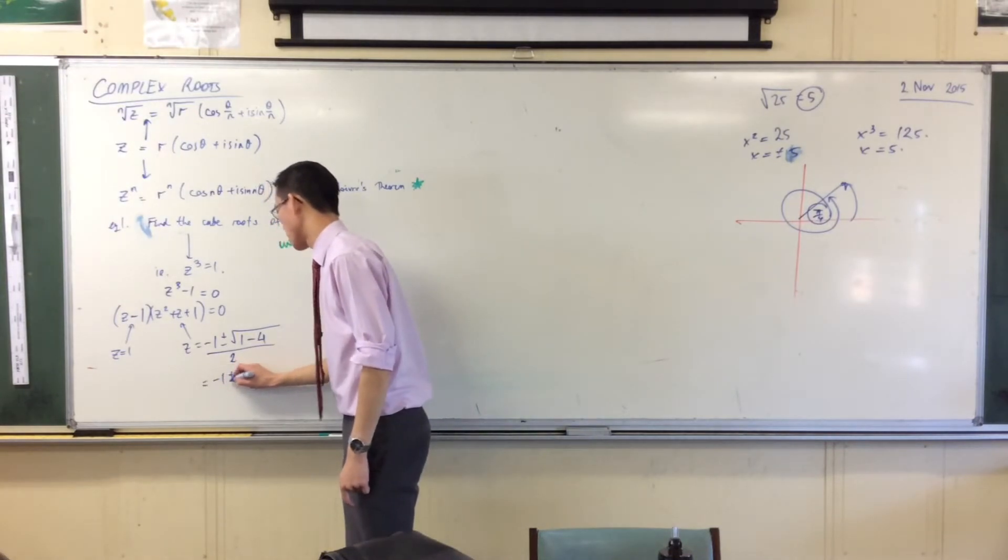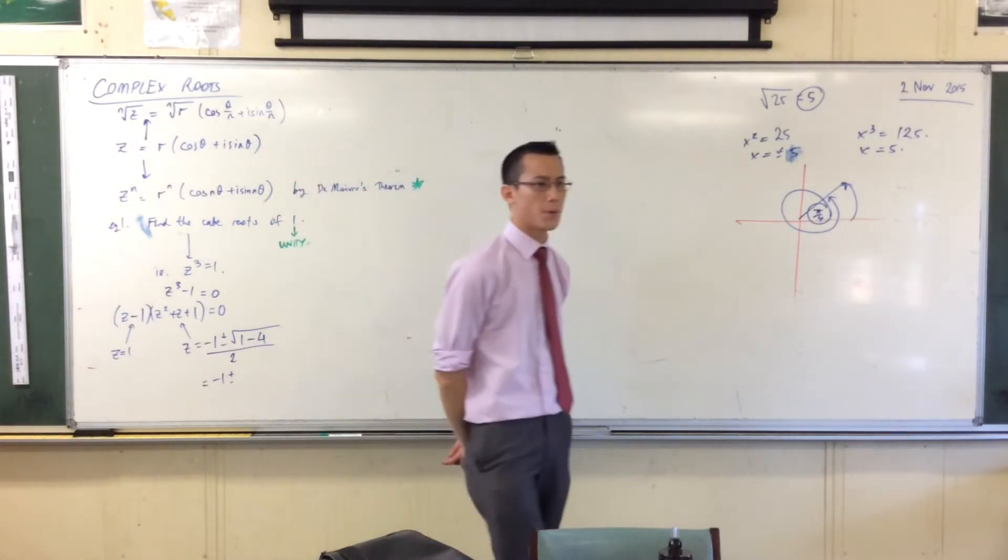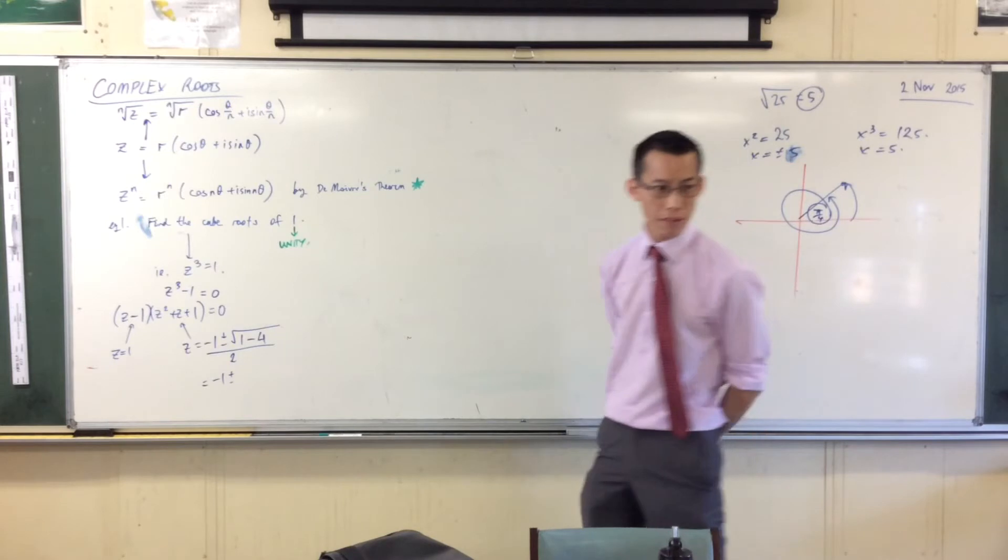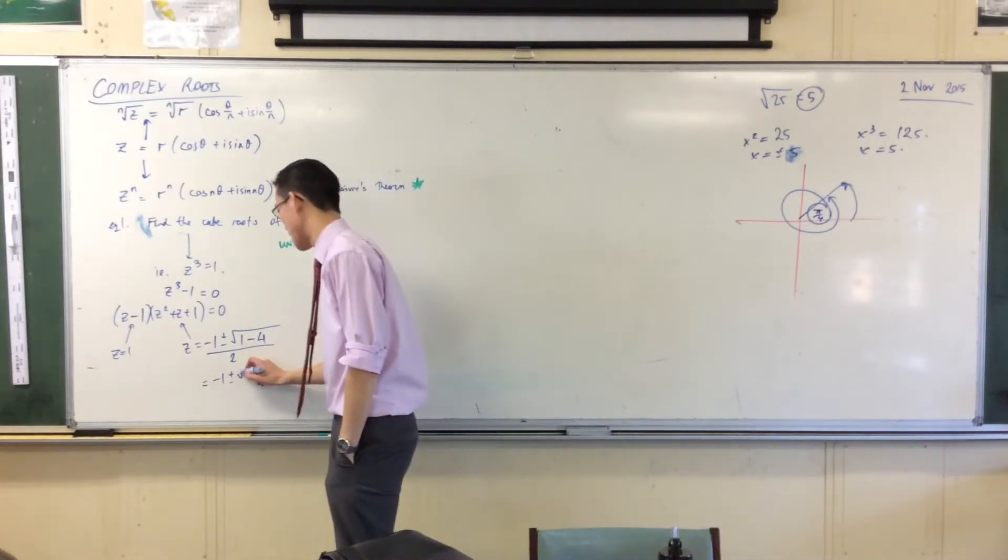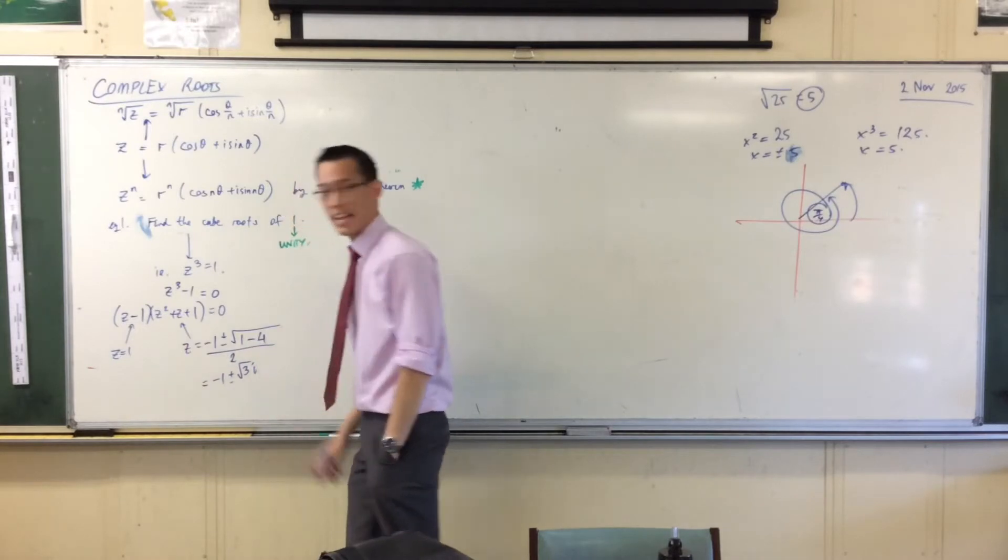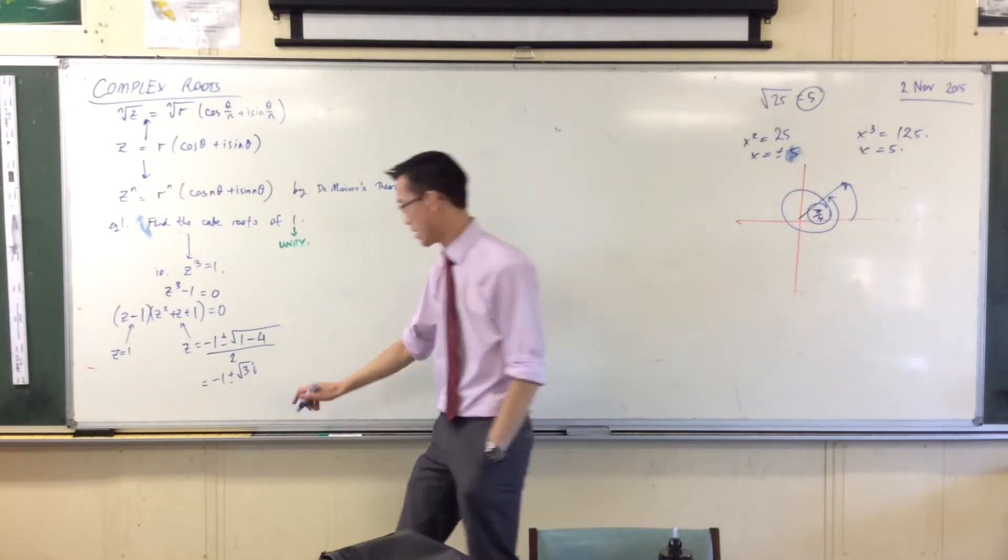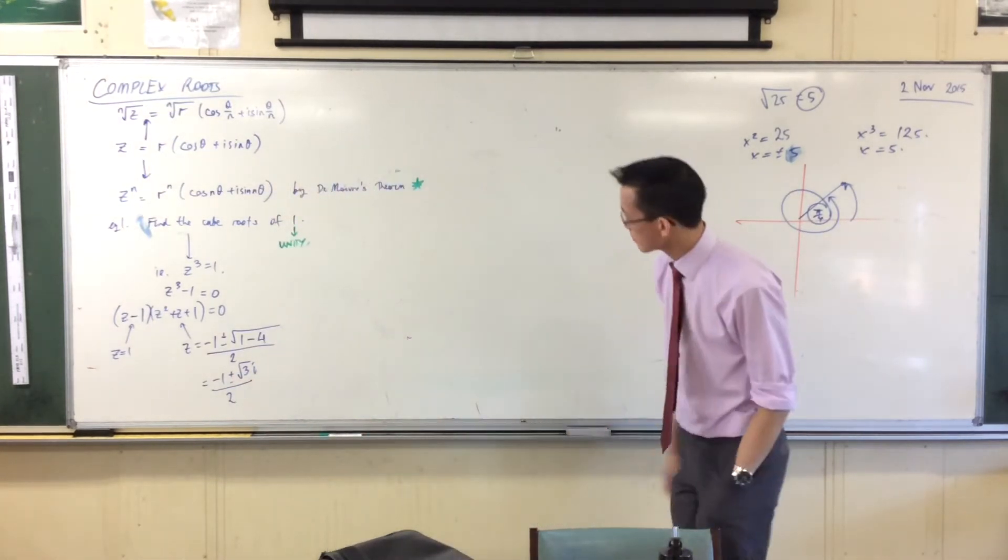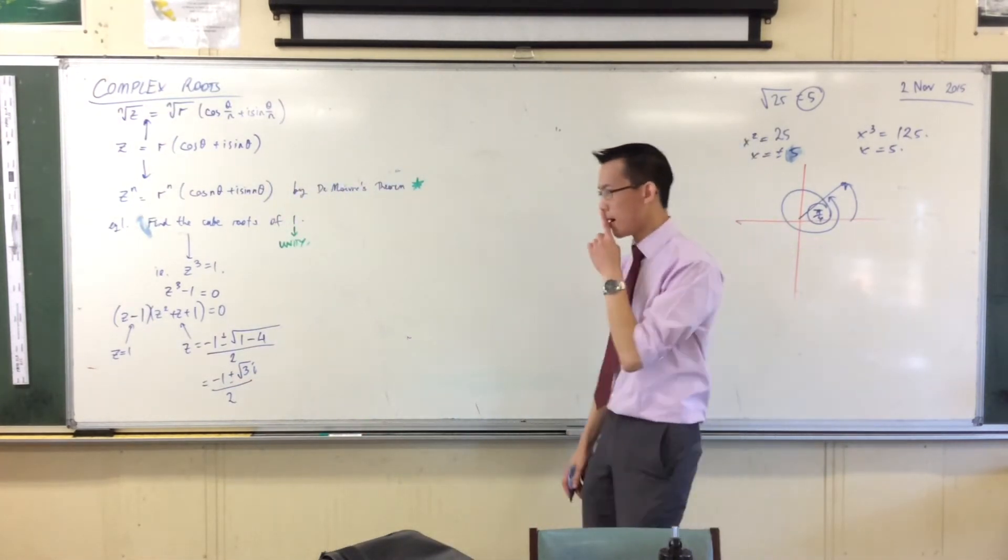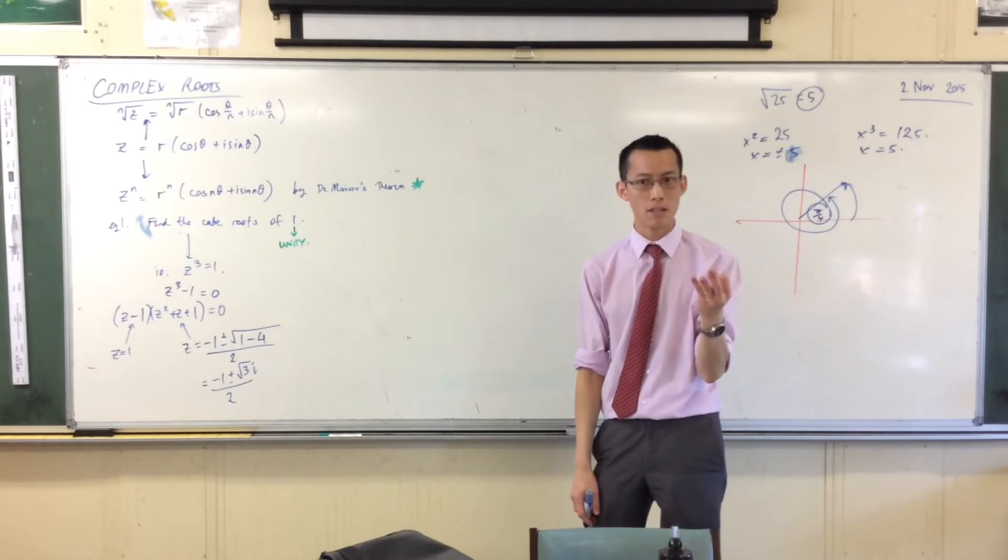On the denominator I have 2a, which is 2. Let's have a look at it. This is minus 1. What's underneath the square root? Negative 3. So I'm going to rewrite that with my imaginary units. That's the square root of 3, that's how many lots of i I have. That's all divided by 2. I have 3 answers here.